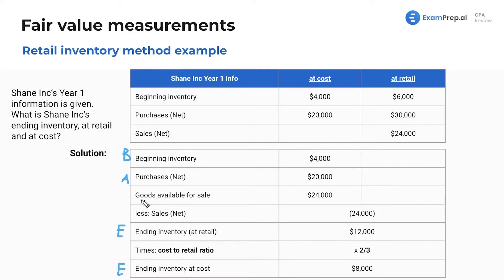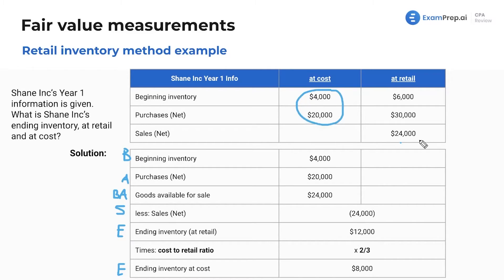Goods available for sale is B and A together. Then B and A minus sales of 24. We use our cost amounts — historical costs. For sales, we're only given the retail sale amount. So that's how we get to our ending inventory at retail.